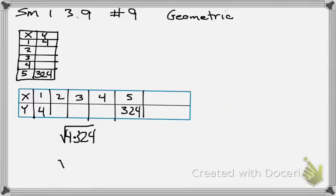So what is 4 times 324? It's a good time for calculator, people. What is it? 1296. So what is the square root of 1296?